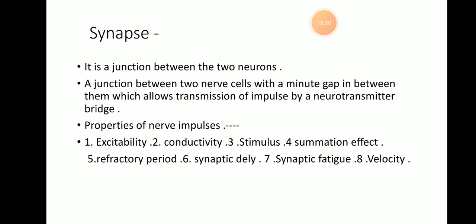The next point is the synapse. The synapse is the junction between two nerve cells, with a minute gap in between them, which allows a neurotransmitter bridge.